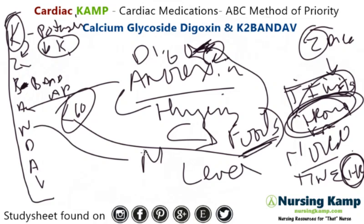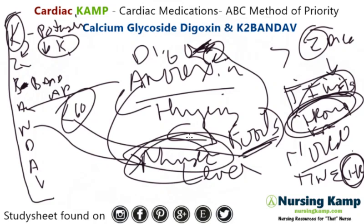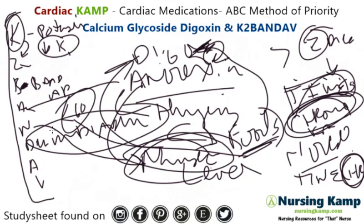Nausea comes later. That's problematic because anorexia comes first and then nausea as the levels are increasing toward two. The doctor needs to be notified whenever a patient is digitoxic with nausea. Dysrhythmias and diarrhea also come with this.